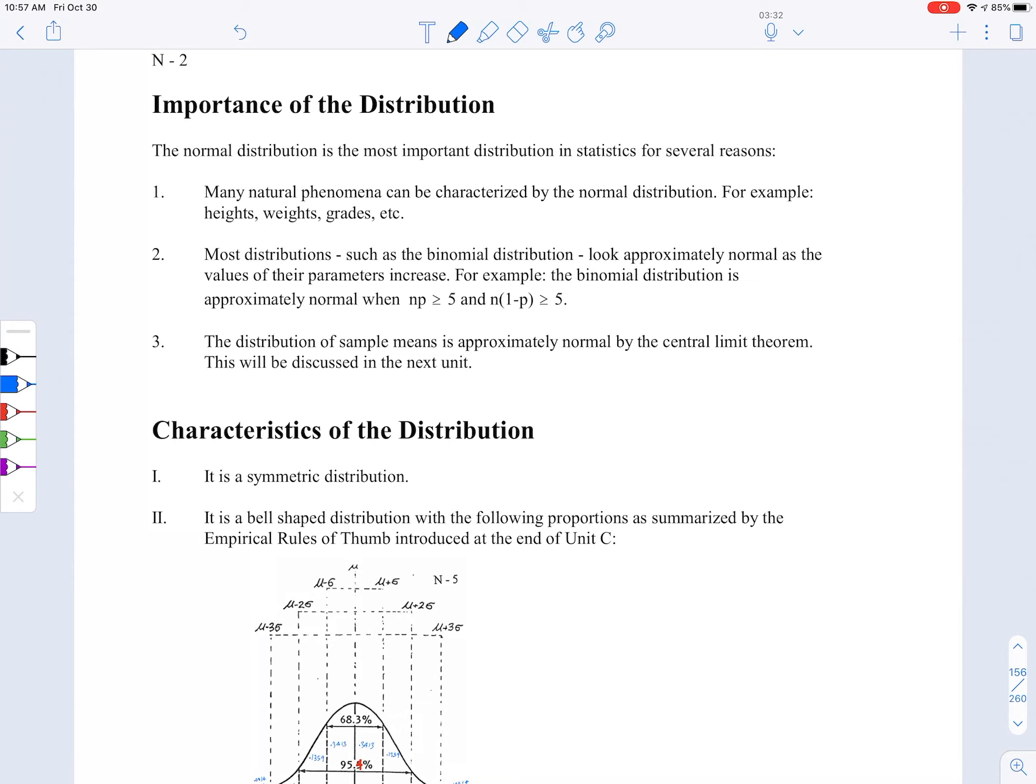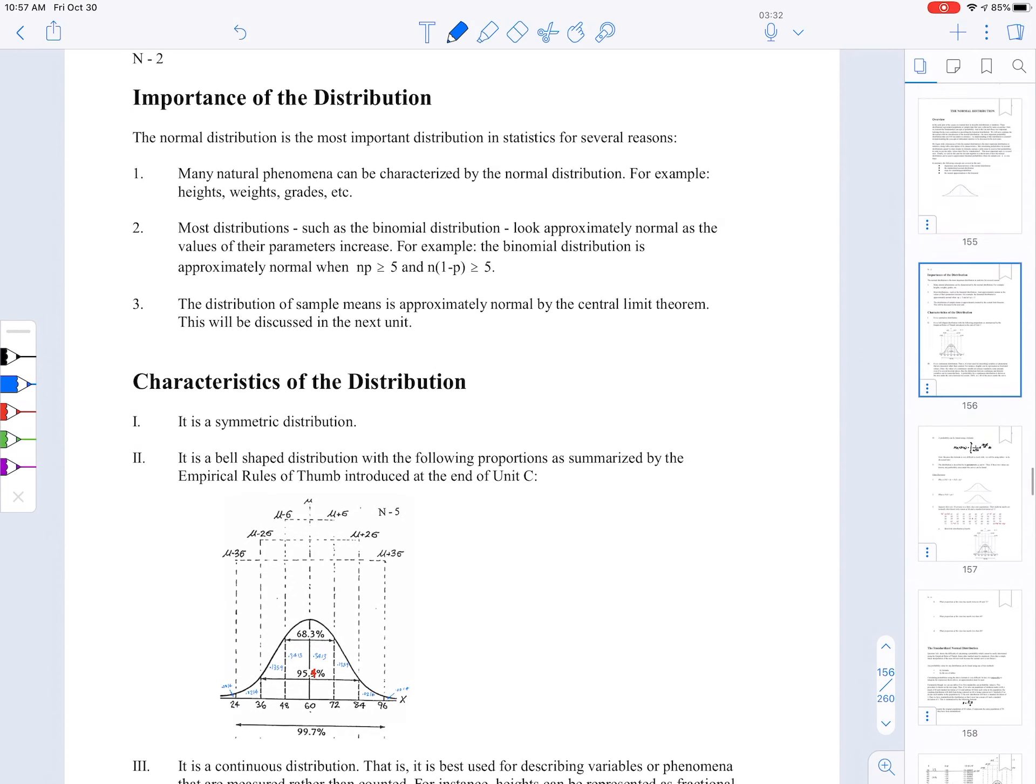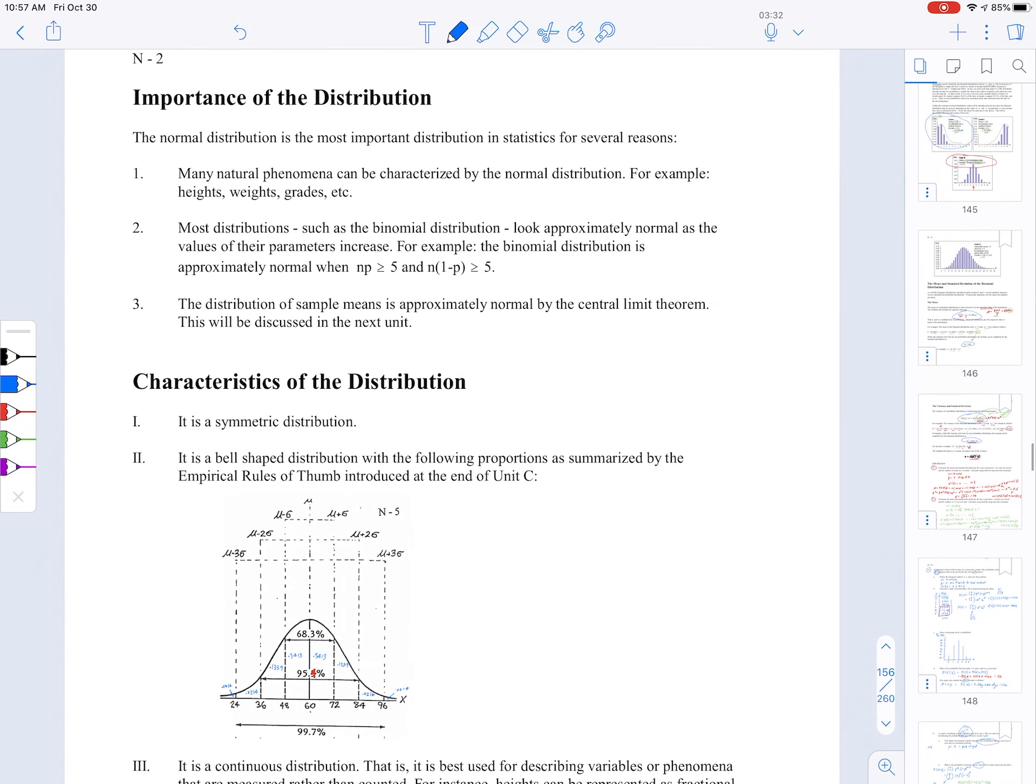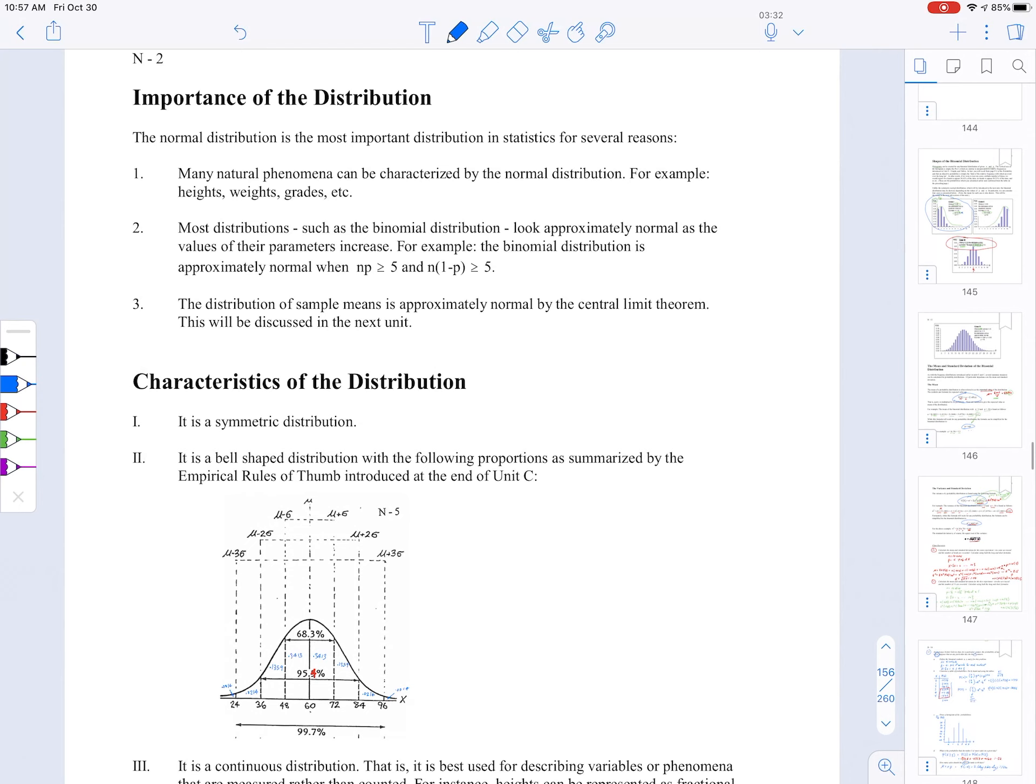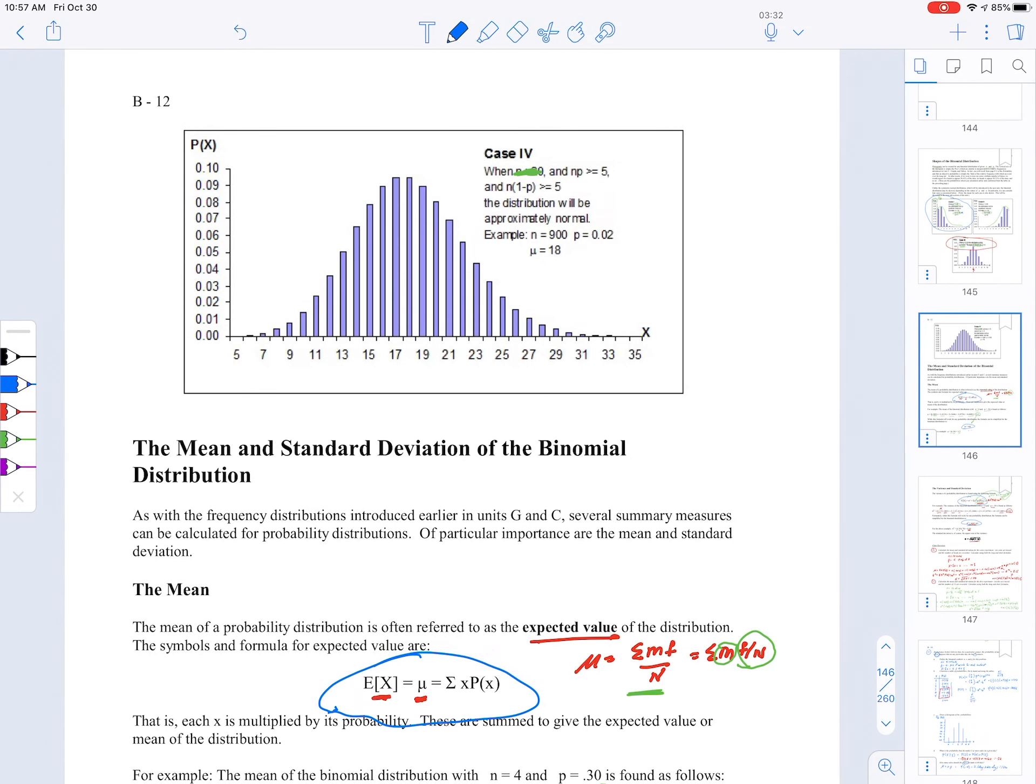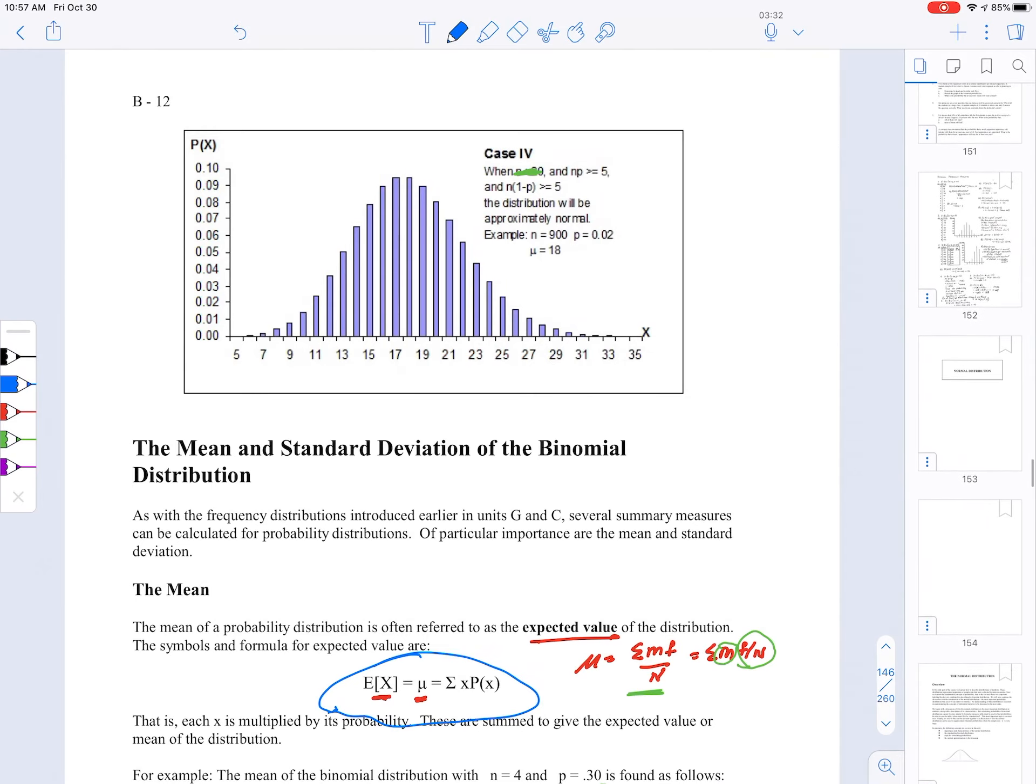The second thing is that most distributions, like the binomial distribution, look approximately normal as their values of their parameters increase. Let's just go back here to the binomial distribution for a moment. This is the guy I'm talking about right here. When you've got n times p greater than or equal to 5, and n times 1 minus p greater than or equal to 5, which we'll talk about at the end of this unit. Do you see that nice bell curve there? That's what we're talking about.